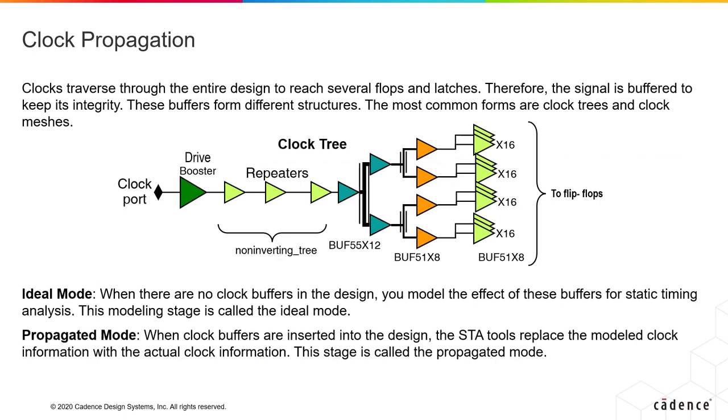In any design, a clock triggers several flops and latches. These clocks are considered high fan-out nets, and they need to reach or traverse the entire design to reach these flops and latches. To keep the integrity of the clock signal, it needs to be constantly buffered, and these buffers can be in different structures. The most common forms are known as clock trees or clock meshes, and so you would see different types of buffers along the clock tree and or clock mesh. These are generally referred to as clock trees. You might start out with a drive booster and a bunch of repeaters, then different kinds of buffer strings placed along the length of the tree traverses to reach the flops or latches. In the case where your design does not have any clocks, typically during synthesis, the clock tree doesn't exist, so you need to model the effect of a clock tree into your design.